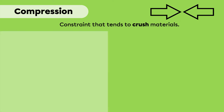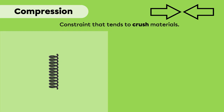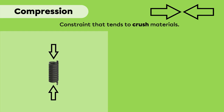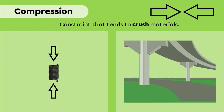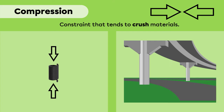For example, if we compress a spring — in other words, if forces are applied from opposite directions towards the inside of the spring — the coils move closer to each other. Compression forces are also present in the pillars of a viaduct, because the surface of the bridge applies a downward force on the pillars, while the ground applies an upward force to the pillars to support them.